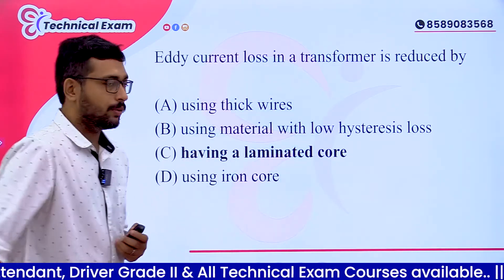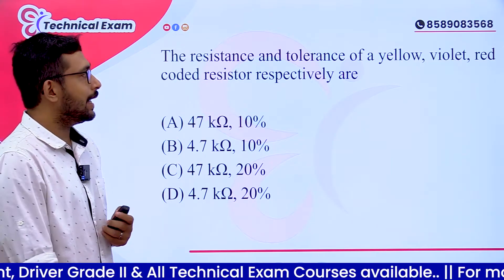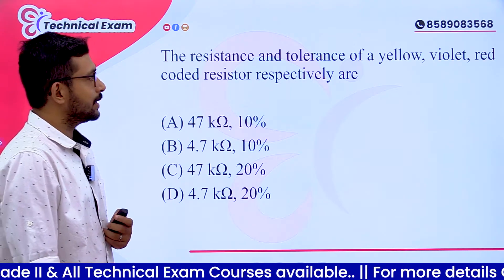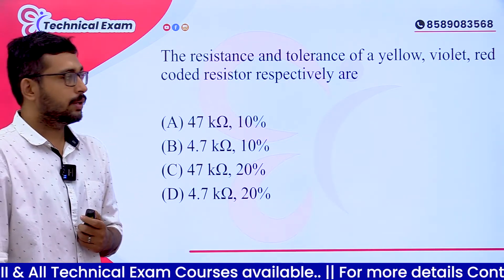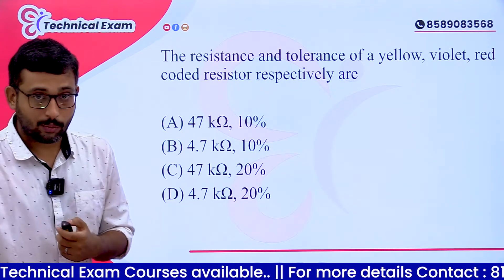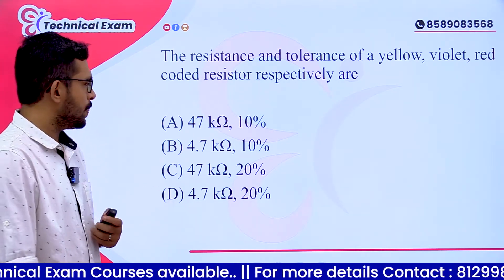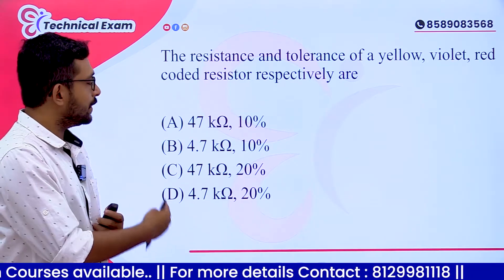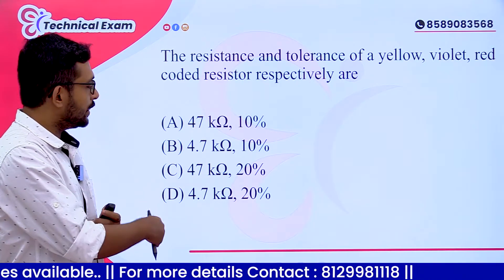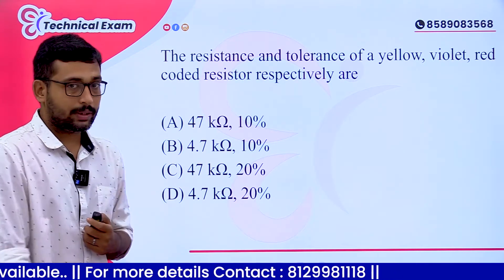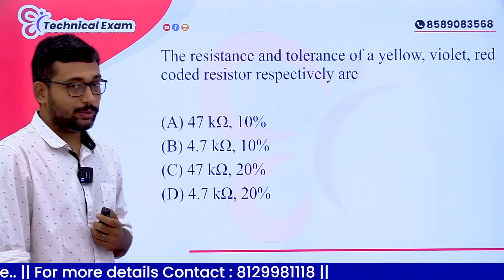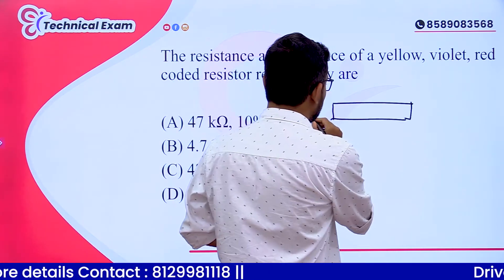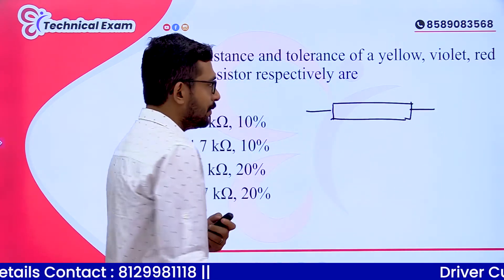The resistance and tolerance of a yellow, violet, red coded resistor: the options are 47 kilo ohm with 10% tolerance, or 4.7 kilo ohm with 10% tolerance. The resistor has 3 color bands.